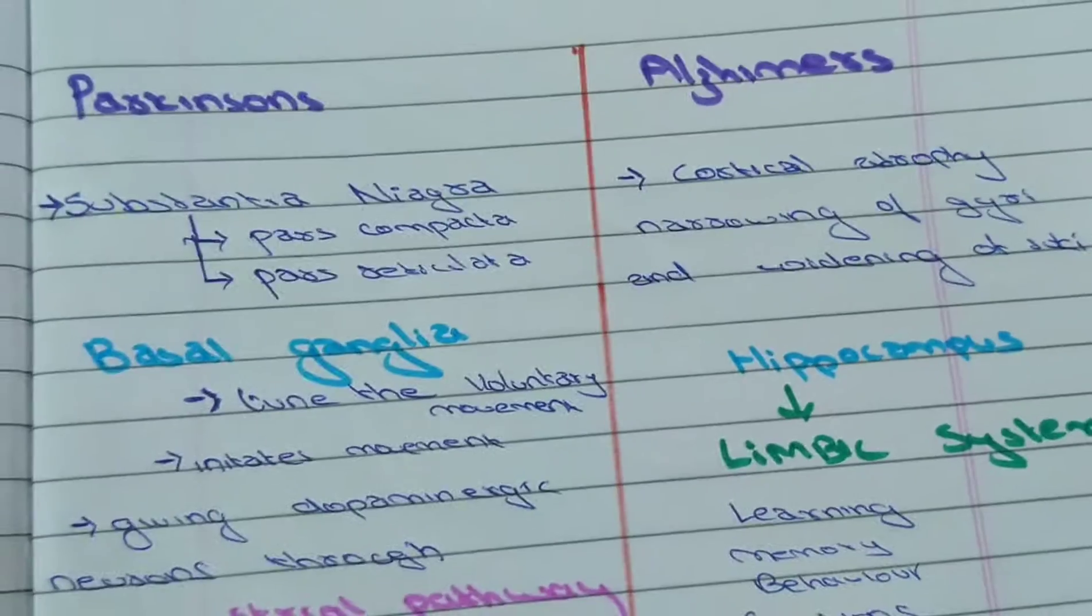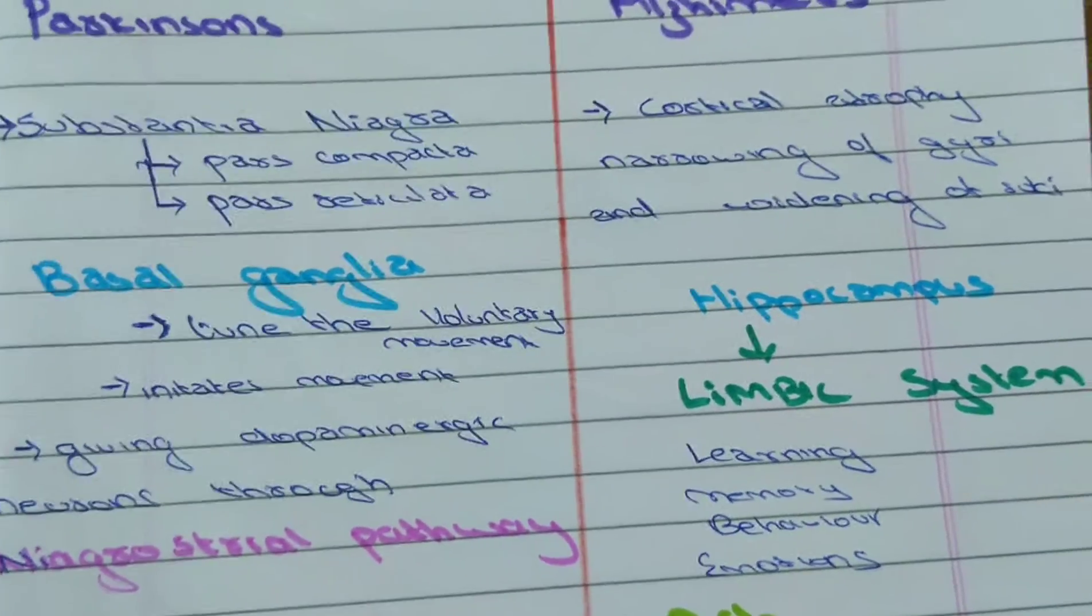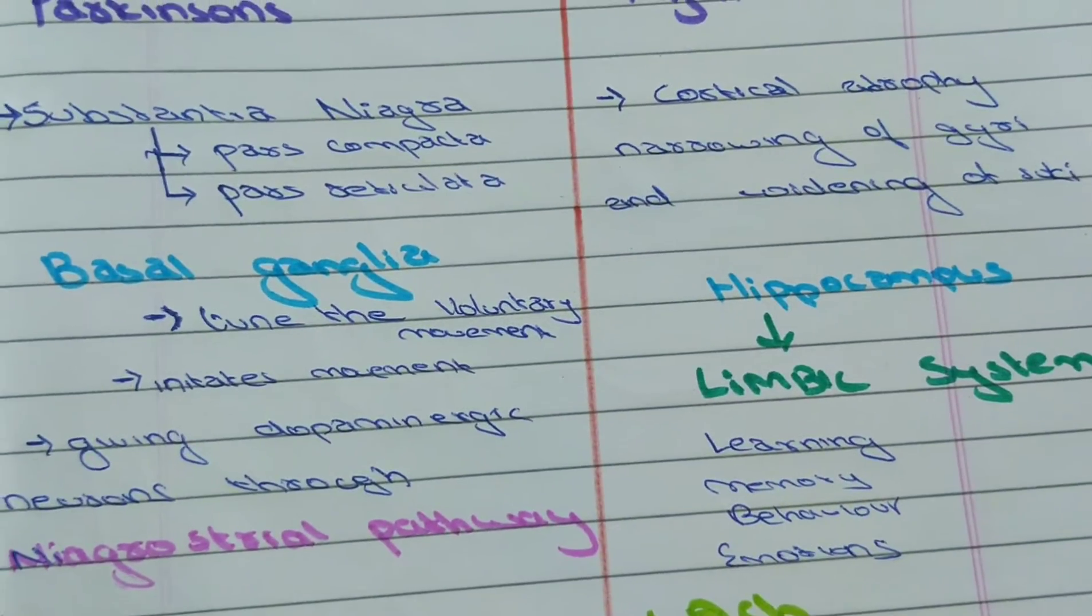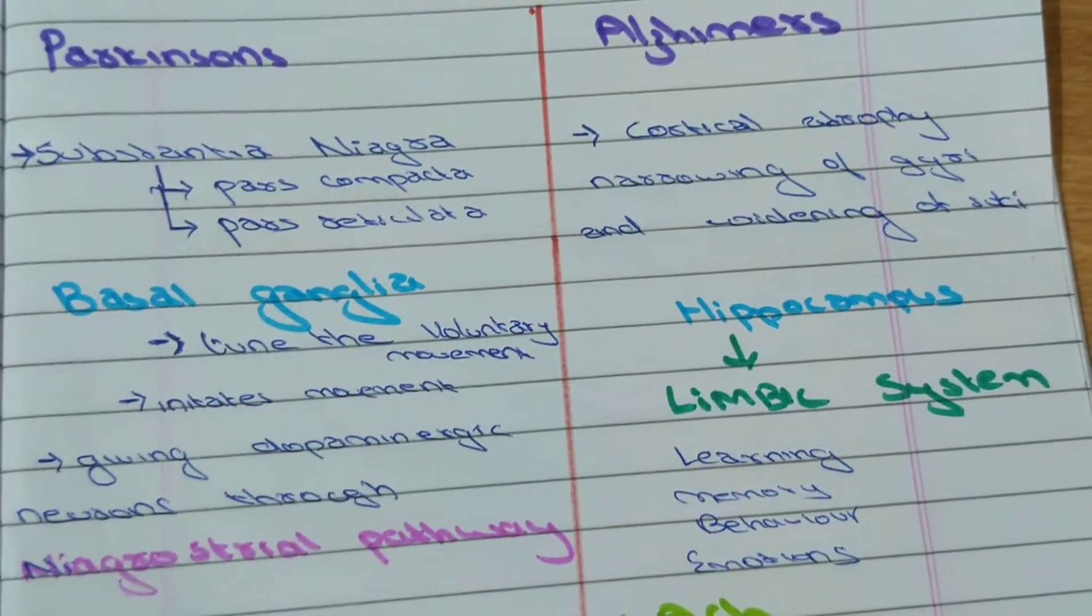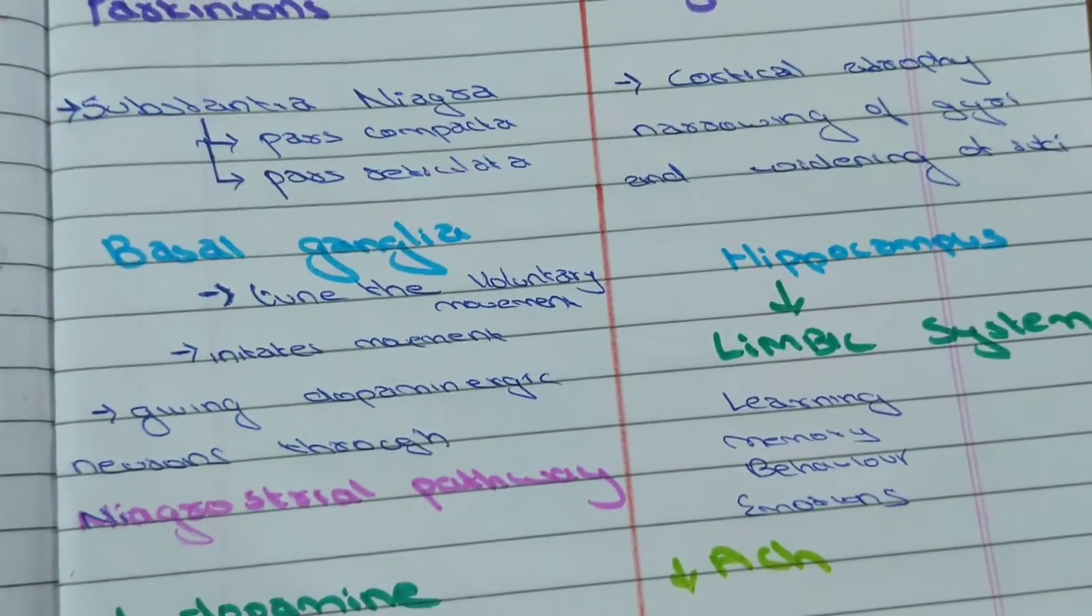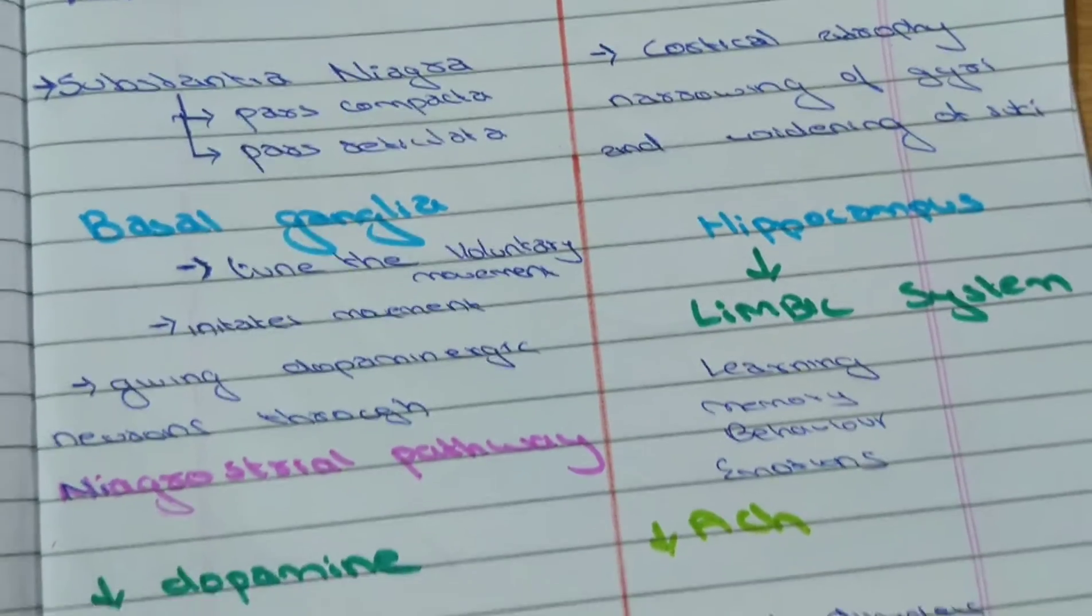Pars compacta of the substantia nigra is affected in Parkinson's. Substantia nigra is a part of basal ganglia which tunes voluntary movement. Substantia nigra initiates movement in both direct and indirect pathways by giving dopaminergic neurons through nigrostriatal pathway.